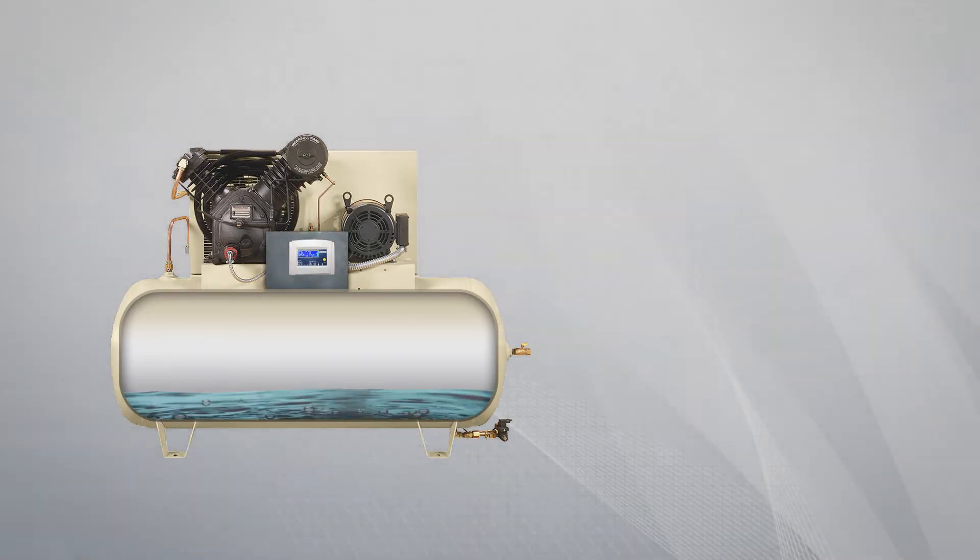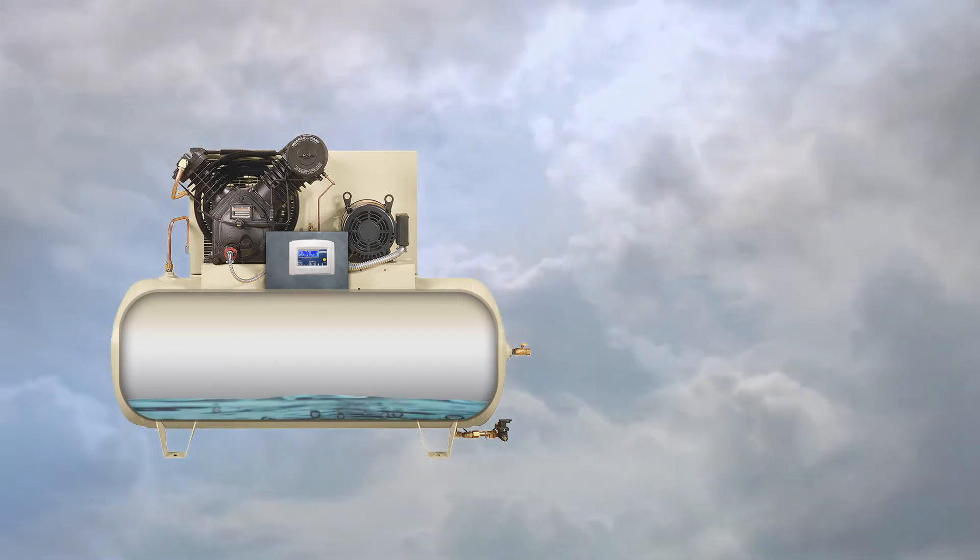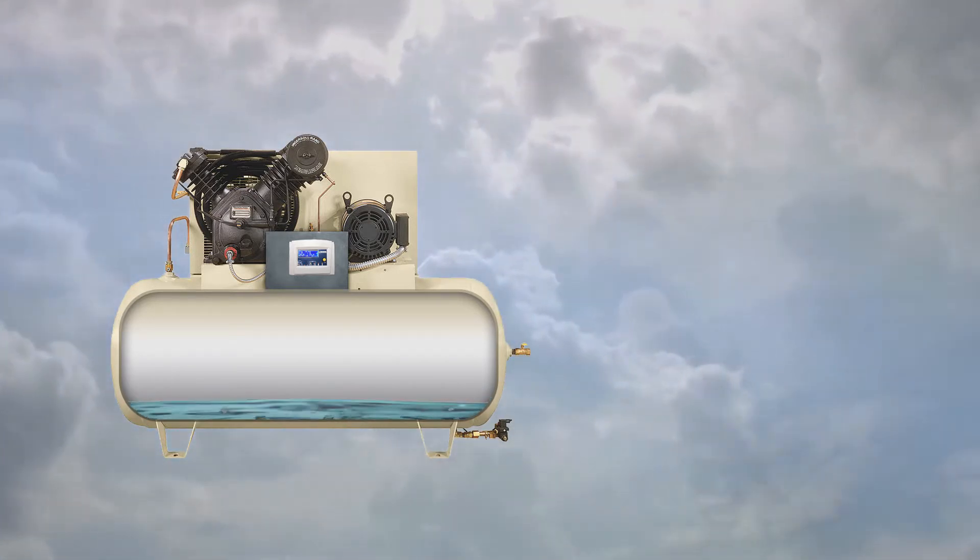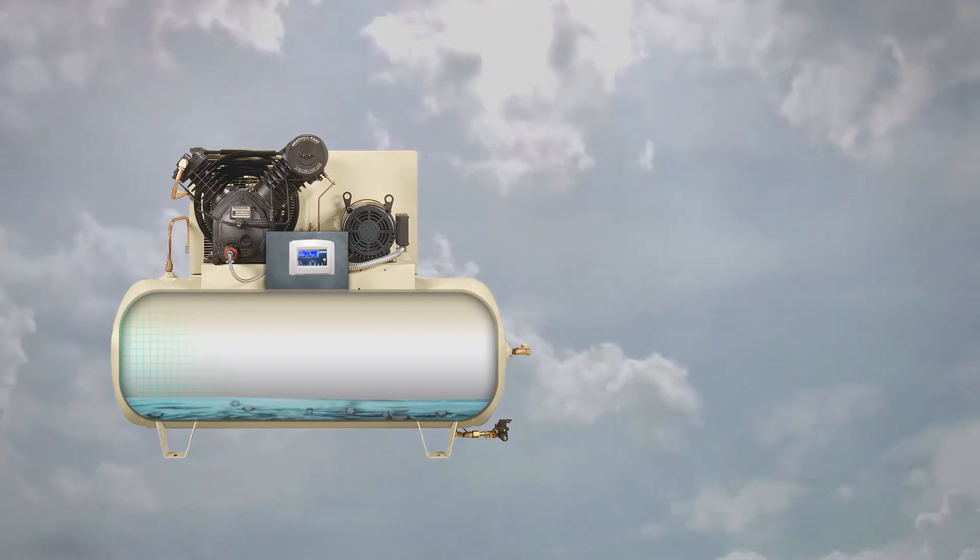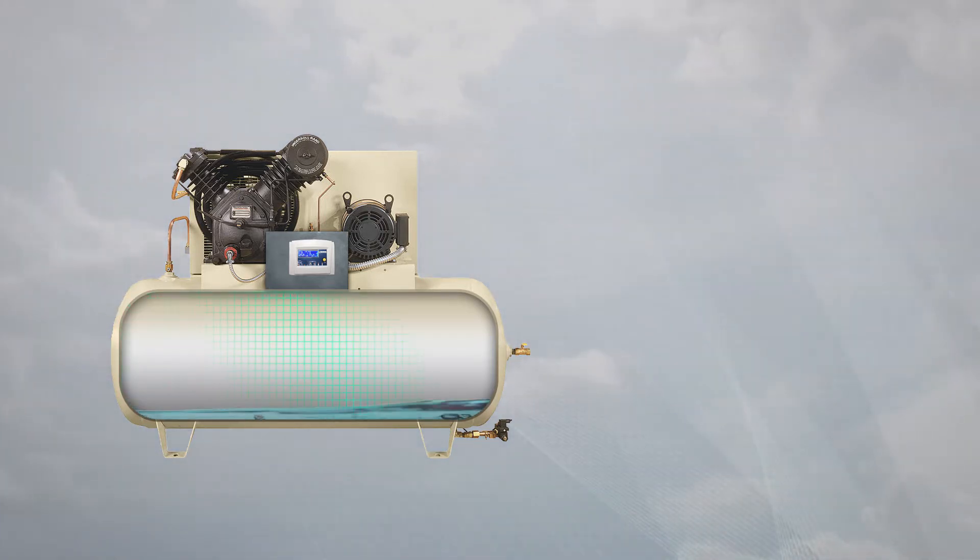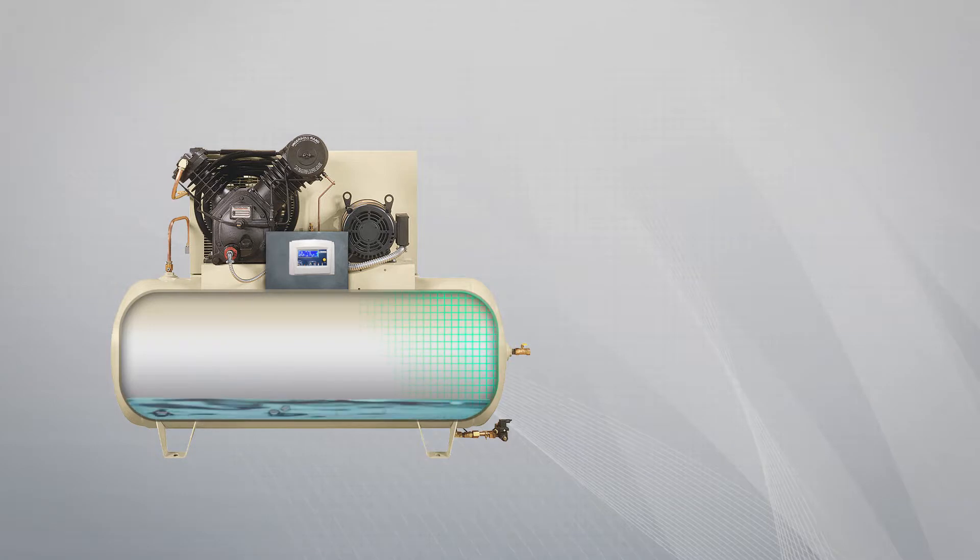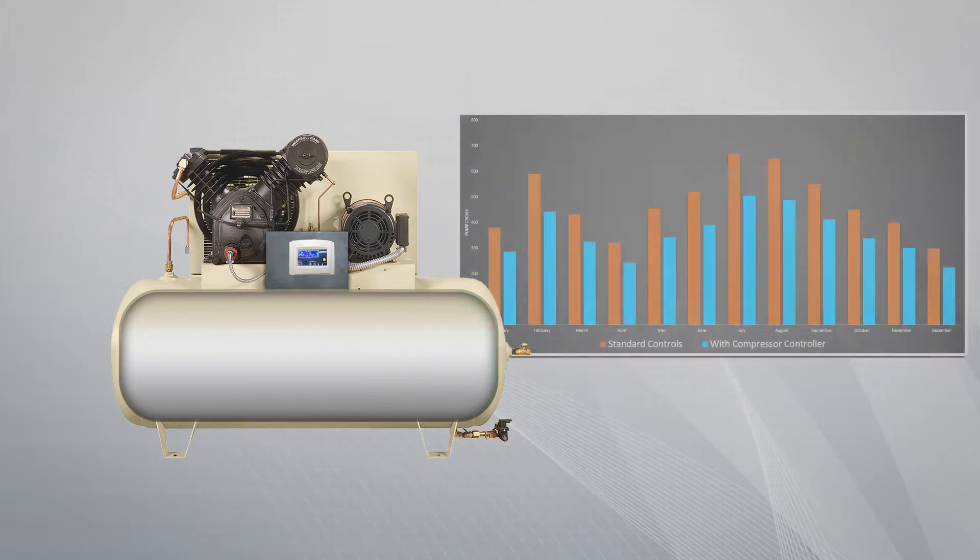The compressor controller includes humidity and ambient temperature as part of the operation model, allowing it to precisely calculate the volume of condensate formed during air compression at all times. With this knowledge, the compressor controller controls expansion tank drain cycles only when condensate is present and opens the valve only long enough to expel the condensate without wasting compressed air.